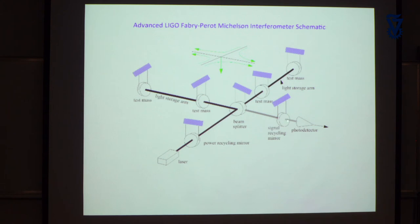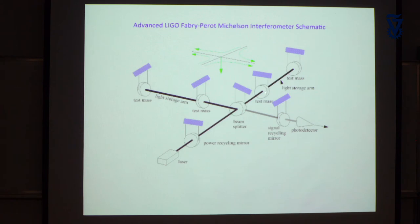With equal times, again no light gets to the photo detector. Now there are two additional mirrors — the inventions that came from Billing, Schilling, and Drever. When you make the times equal in the two arms, the light all goes back to the laser — it doesn't get lost. If you put a partially reflecting mirror between the beam splitter and the laser, the light coming back from the interferometer and the light from the laser can be made to cancel each other interferometrically. That's called power recycling.